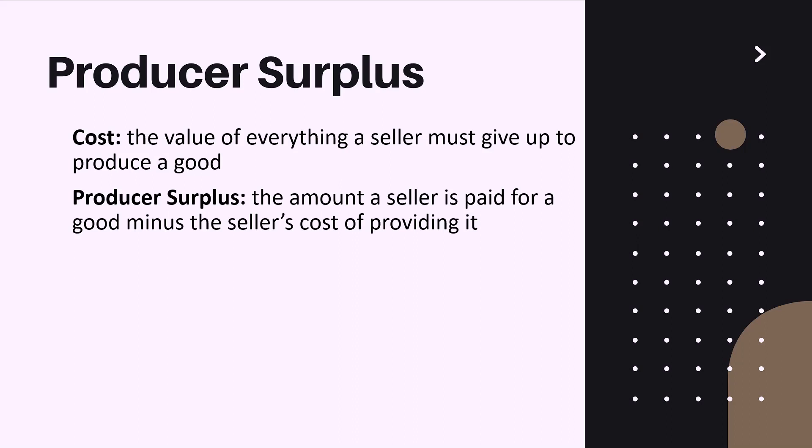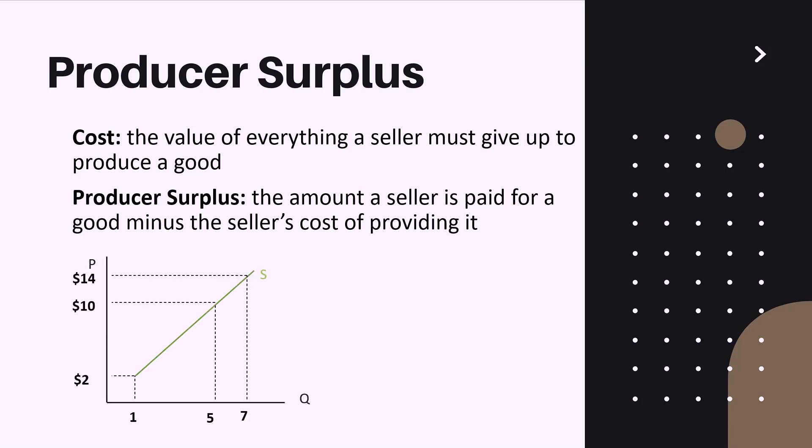To gain a better understanding, let us graph our supply curve. Let's say we have an equilibrium price of ten dollars. The producer surplus is represented by the area between the supply curve and the equilibrium price. Let us also discuss how producer surplus changes with a change in equilibrium price.